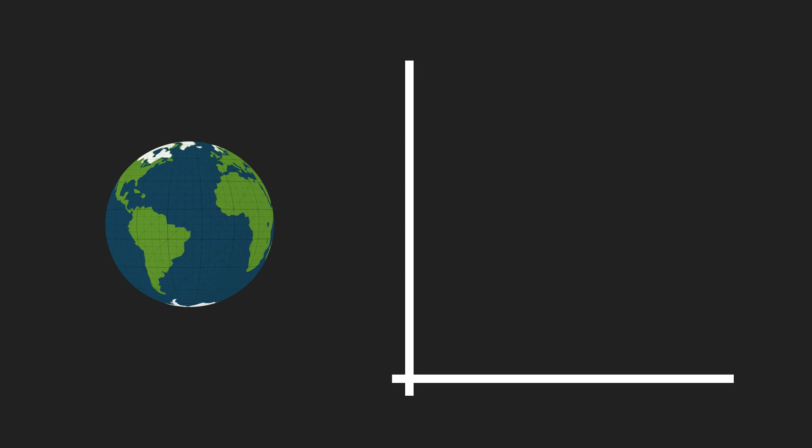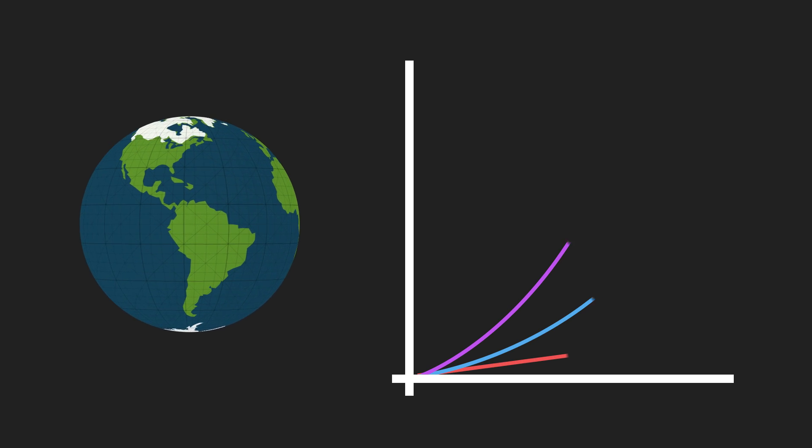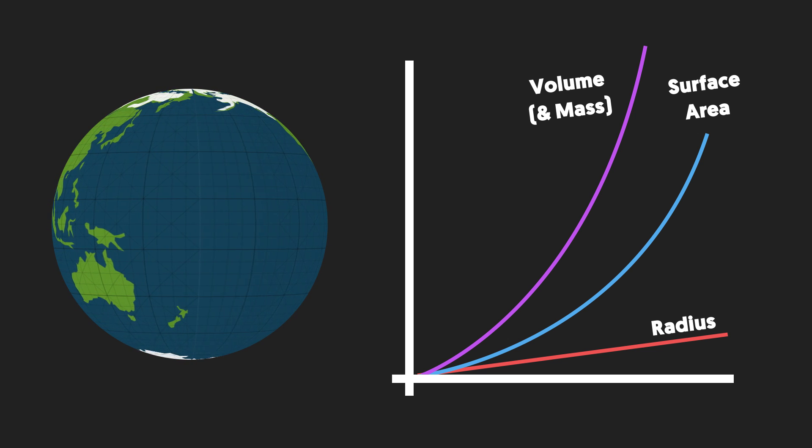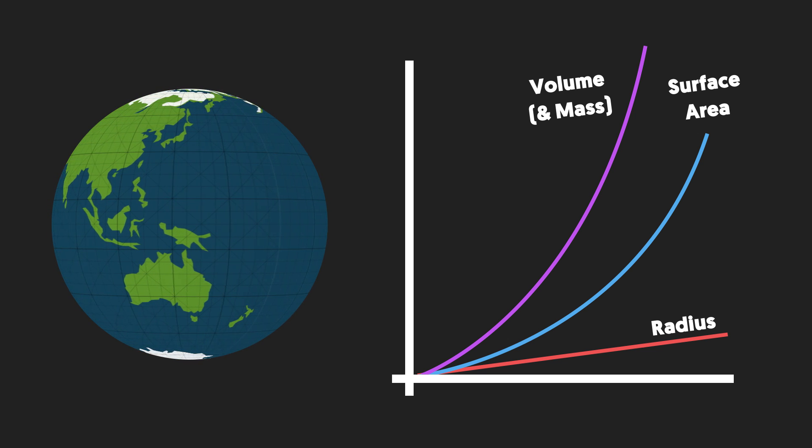The square cube law prevents things from getting too large. In other words, as humans get taller, the volume and weight increases much faster. Reduced gravity wouldn't bypass the law, but the boundary would be increased due to the reduced forces.